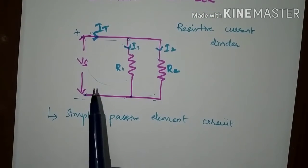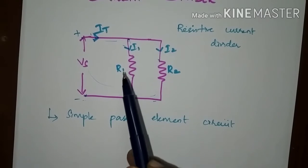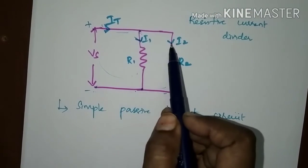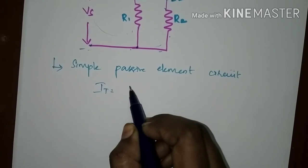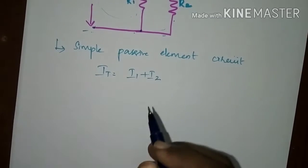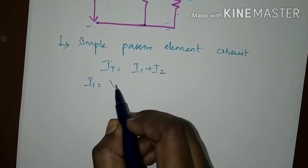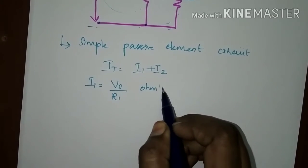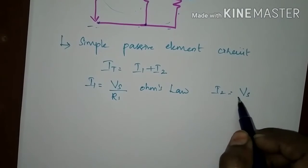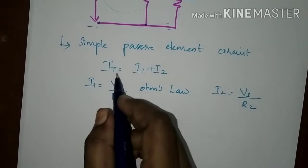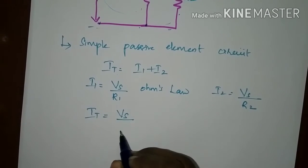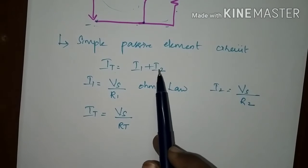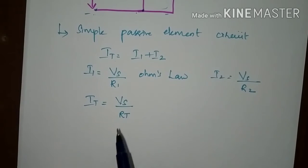You can find the value of the current flowing through each particular resistance: I1 is the current flowing through R1, and I2 is the current flowing through R2. The total current is divided as I1 and I2 in the branches, so IT equals I1 plus I2. According to Ohm's law, I1 can be represented as the total supply voltage Vs divided by R1, and I2 as Vs divided by R2. The total current IT equals Vs divided by R-total or R-equivalent. We can find the particular current values I1 or I2 using the current divider rule.